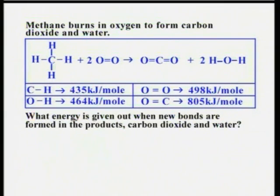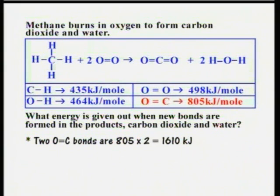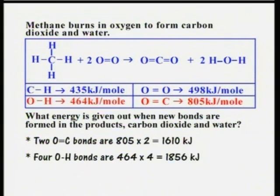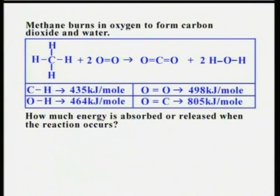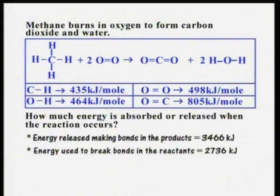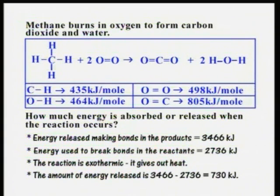What energy is given out when new bonds are formed in the products, carbon dioxide and water? Two C=O double bonds: 805 × 2 = 1610 kJ. Four O-H bonds: 464 × 4 = 1856 kJ. Added together, that's 3466 kJ. In this reaction, more energy is released in making the bonds in the products (3466 kJ) than is used to break the bonds in the reactants (2736 kJ). So the reaction is exothermic — it gives out heat. The amount of excess energy released per mole of reactants is 3466 − 2736 = 730 kJ.